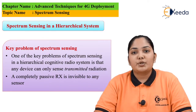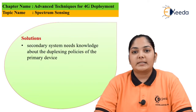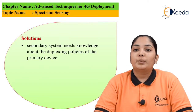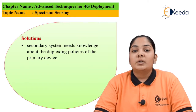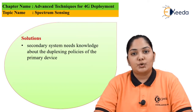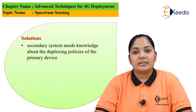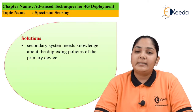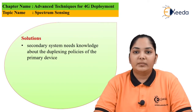There are some solutions provided in order to identify the receiver frequency. The first solution is that the secondary devices should be able to understand the duplexing technique that has been used. Once we understand this duplexing technique and know the frequency on which the transmitting signal is operating, we can easily recognize the frequency on which the receiver is going to receive the signal. So frequency duplexing is one of the techniques.